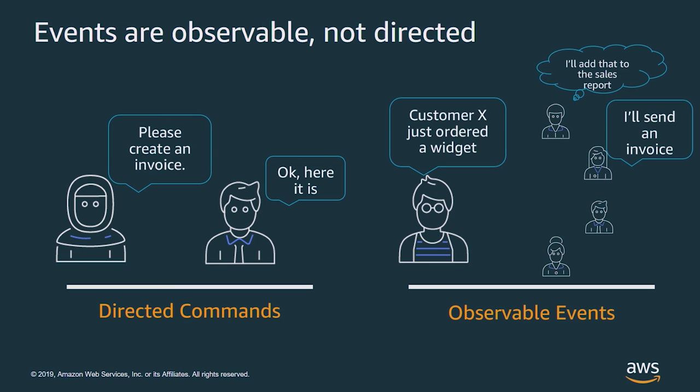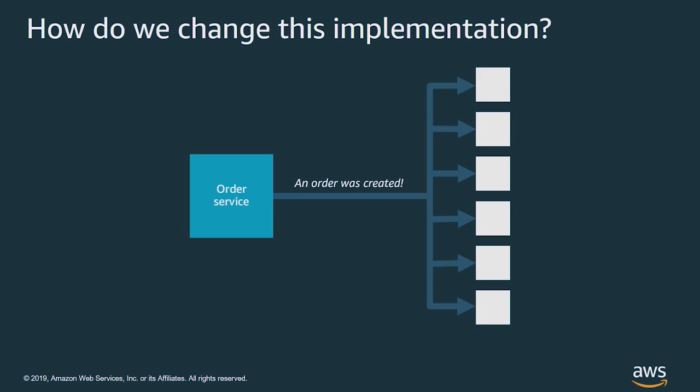Events, on the other hand, are merely observable by other systems. The person on the left says, "customer X just ordered a widget." A person at the back hears that and says, "I will add that to a sales report." Another person hears it and decides to add it to an invoice. And two other people hear it but take no action. The benefit is that event producers don't need to have any knowledge about who's listening to these events, which keeps them simple. It allows other services to consume events without needing upstream changes.